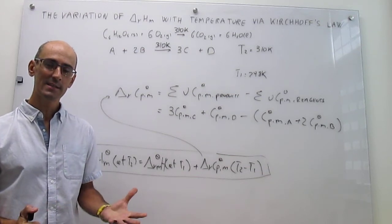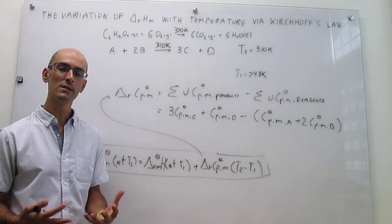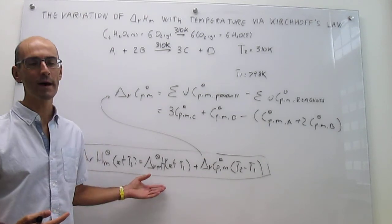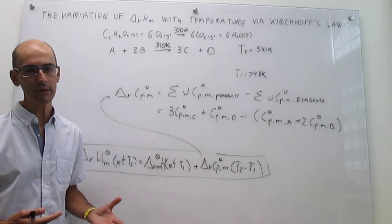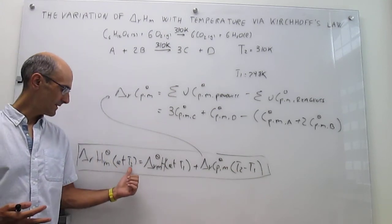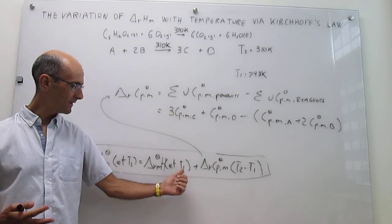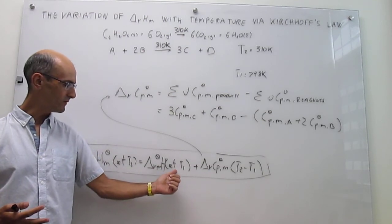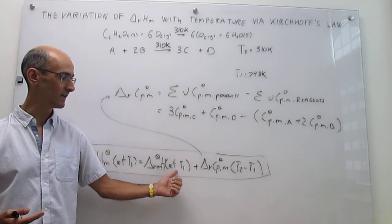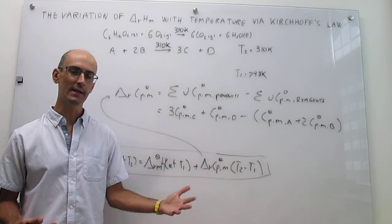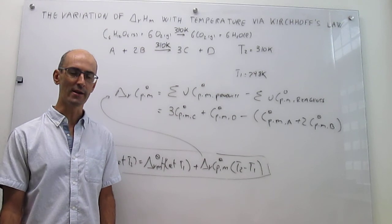To summarize this video: Kirchhoff's law provides a very compact way to obtain the enthalpy of a reaction at a temperature for which you don't have data, utilizing the enthalpy of a reaction at a temperature for which you do have data, plus a correction that has to do with the heat capacities of reagents and products.